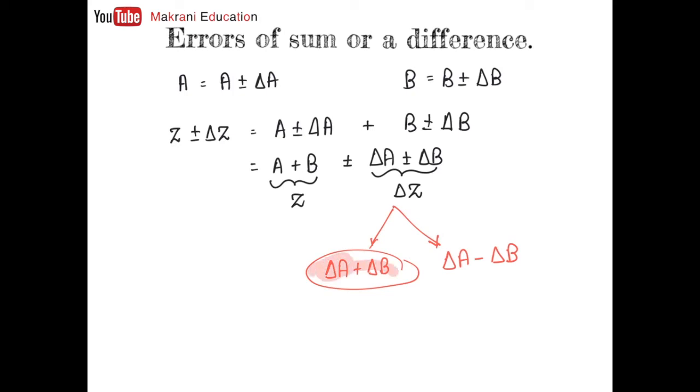Always remember this, so whether you are subtracting or whether you are adding, your resultant error, that is delta Z, should always be delta A plus delta B. So our resultant would be Z plus minus delta Z.